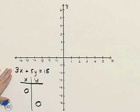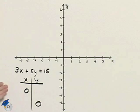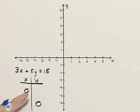We're going to graph the line 3x plus 5y equals 15 by using the x and y intercepts. The x intercept is the point where the y coordinate is 0, and the y intercept is the point where the x coordinate is 0.